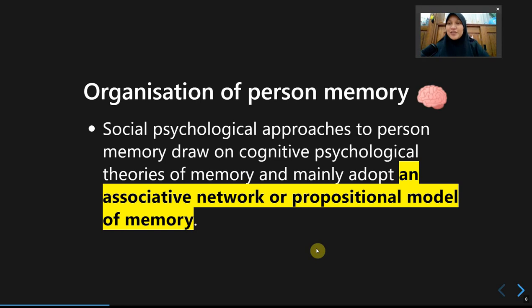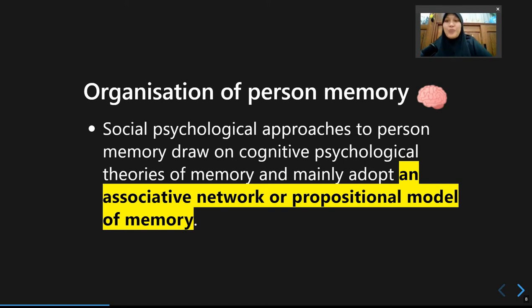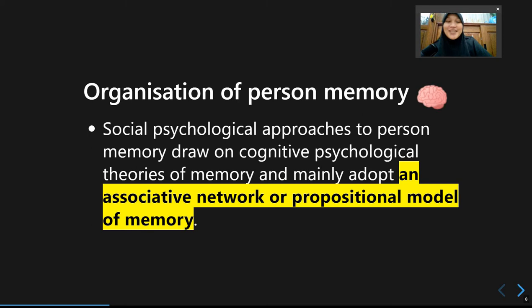This is the second part of our lecture on how we form a perception or impression on others. The second part concerns more on how we use our memories to remember persons that circulate in our lives, how we organize them, and how we use this information that we keep in our memories to regulate our social interaction with other people.